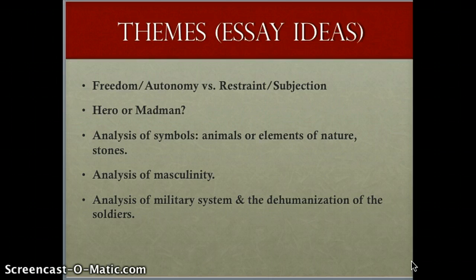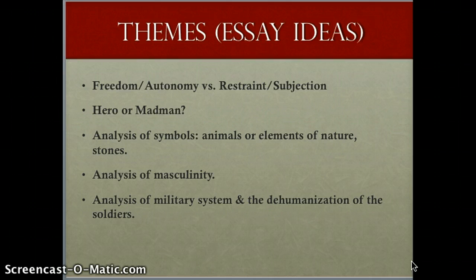The first idea: you could do an essay around freedom versus restraint, or autonomy versus subjection. This is one of the central conflicts in the novel — between being your own person and being free, whatever that means to Robert. So his freedom to be himself, to choose his own path in life, to make his own choices and decisions, and to have the liberty to be himself.